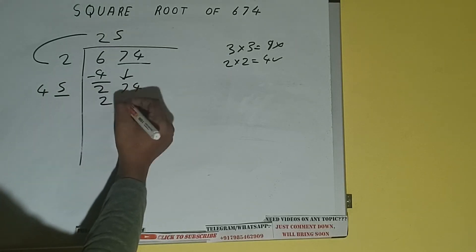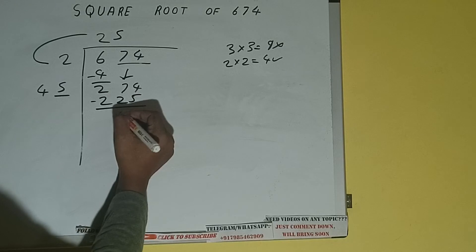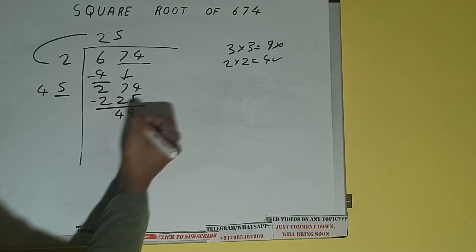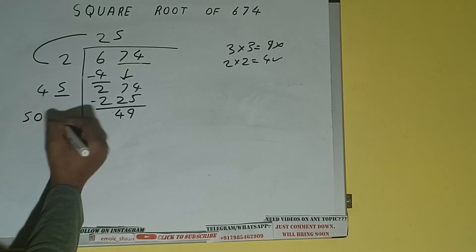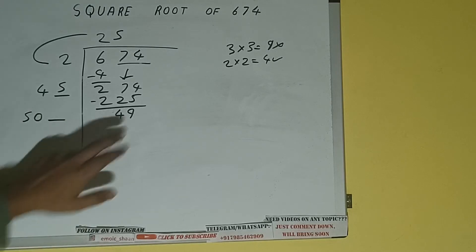So 5 here and 5 here, 225 subtract, and 49 will be left. Now 45 into 5, so add both: 45 plus 5 will be 50, and keep a digit extra.